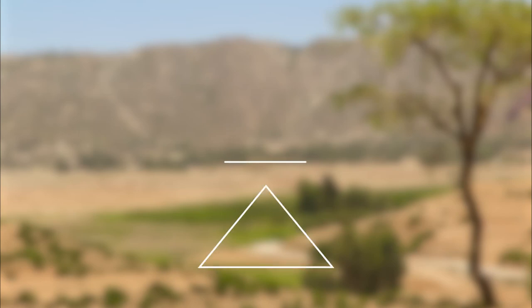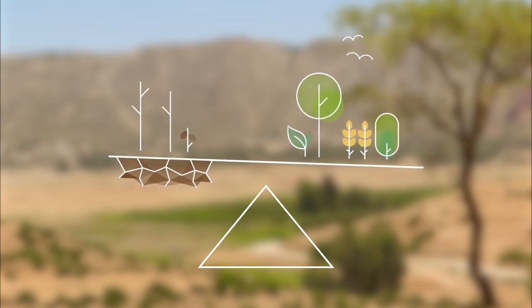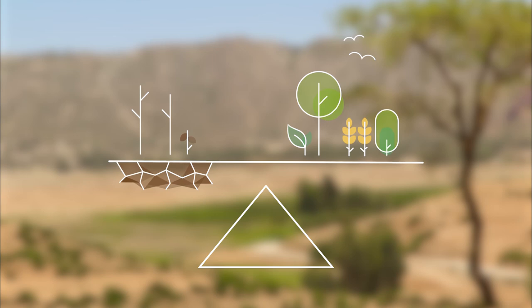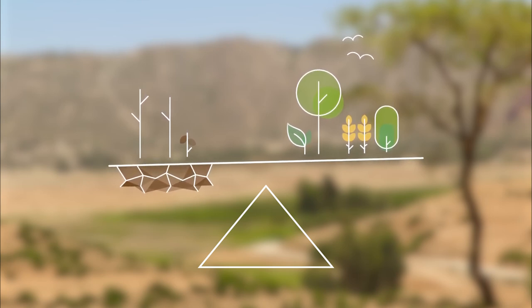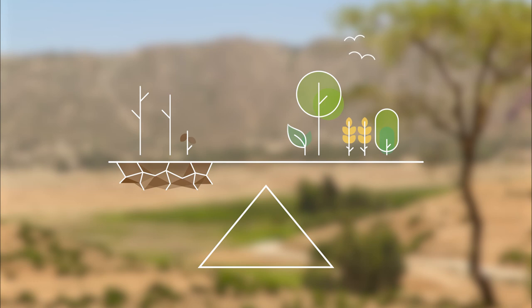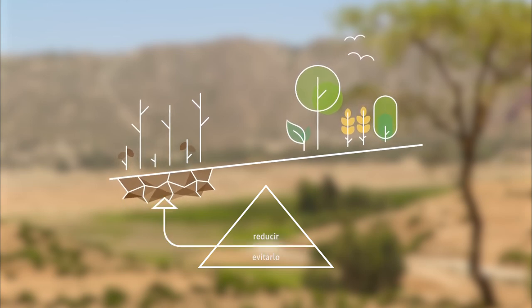La neutralidad en la degradación de la tierra o NDT dibuja un mundo en el que al final no se pierden terrenos por culpa de la degradación. Para lograr esto, la planificación anticipada es clave. El primer objetivo es evitar que suceda la degradación. Cuando se prevé que un uso de la tierra tenga el potencial de degradarla, se planifican y se aplican medidas para evitarlo y para reducir la degradación prevista. La degradación parcial inevitable se compensa con la restauración y la rehabilitación.